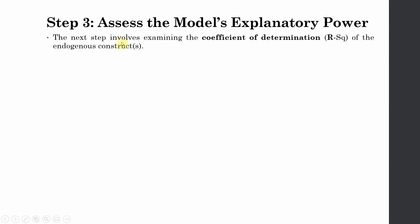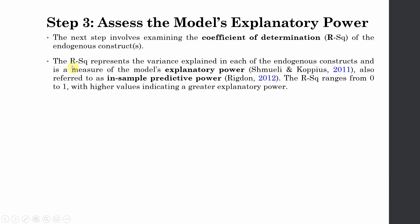The next step involves examining the coefficient of determination, that is the R-square of the endogenous constructs. The R-square represents the variance explained in each of the endogenous constructs and is a measure of the model's explanatory power, also referred to as in-sample predictive power. The R-square ranges from 0 to 1, with higher values indicating greater explanatory power.